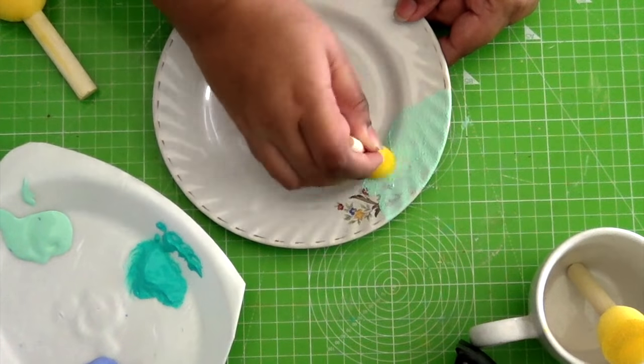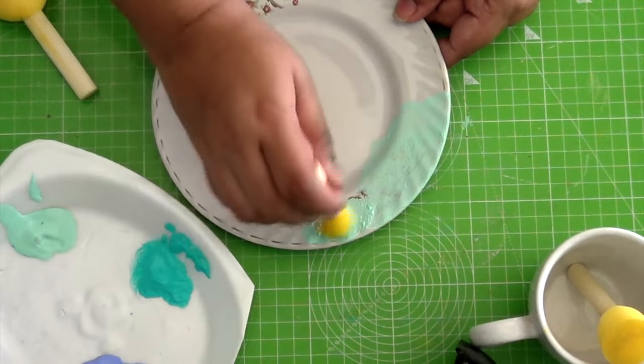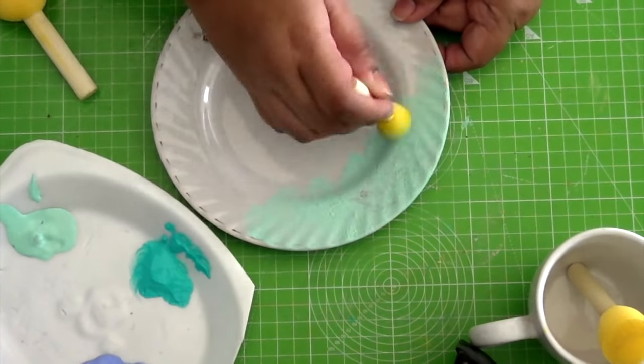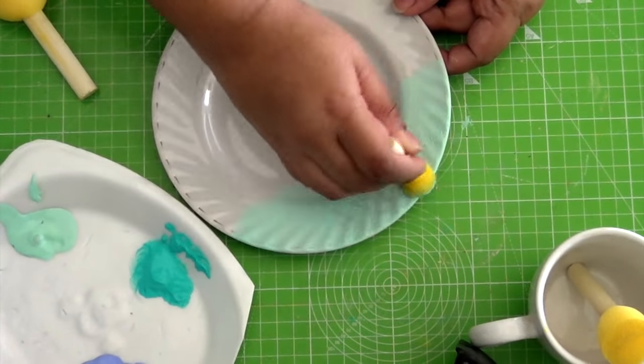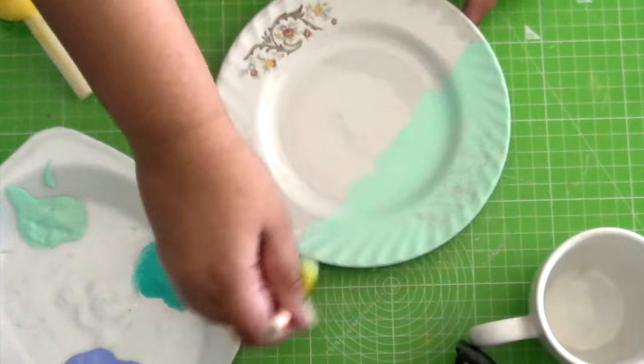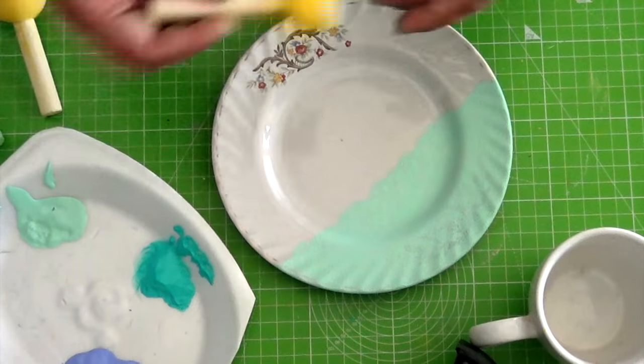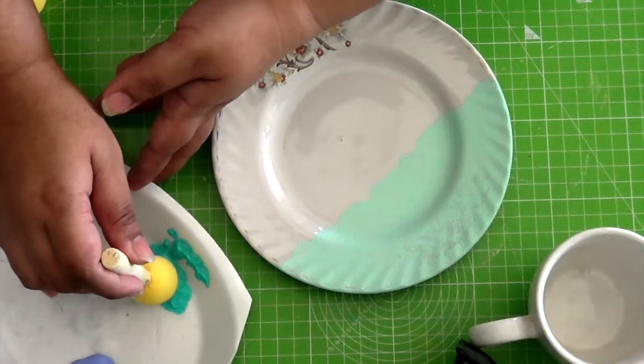I start with the lightest shade first. Since we have taken three different shades for this ombre, we would be covering around one-third of the plate approximately with each color. Once done with the first, move on to the second shade.